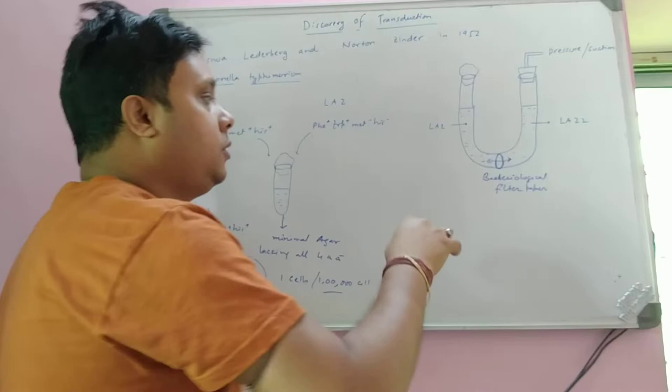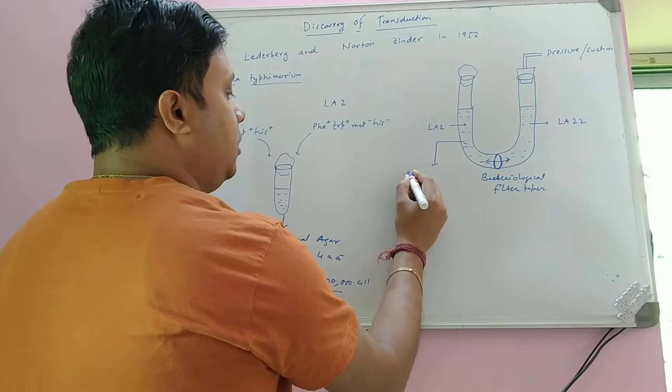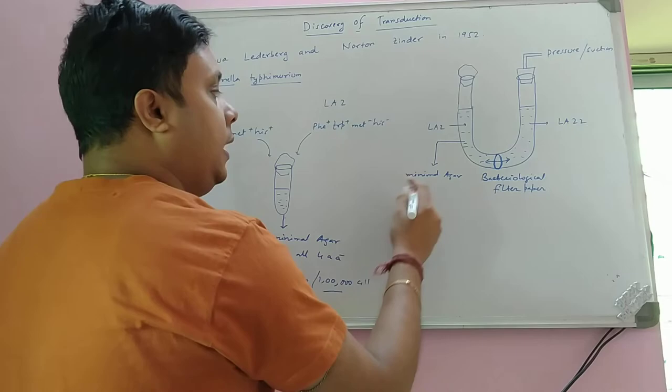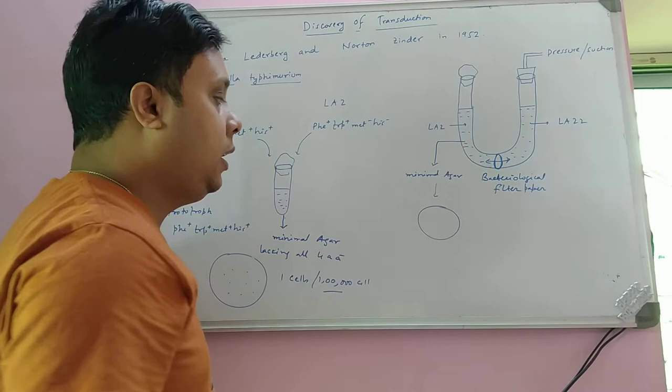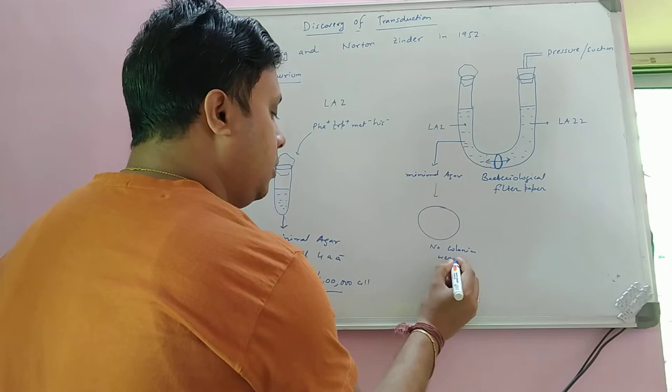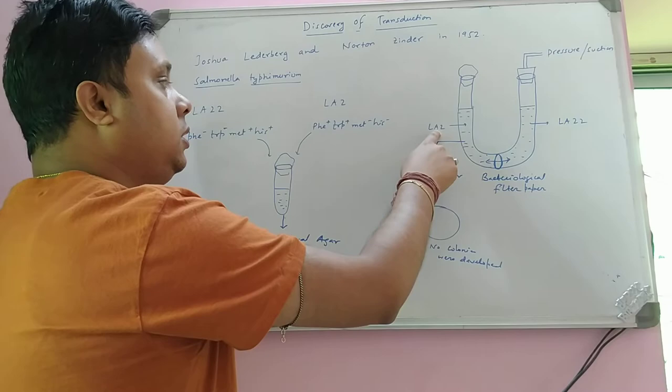After incubation, they took a sample from the left side and plated it on minimal agar lacking all four amino acids — phenylalanine, tryptophan, methionine, and histidine. No colonies were developed, as expected. This confirmed that LAT2, which is deficient in methionine and histidine, was not able to grow on that media.